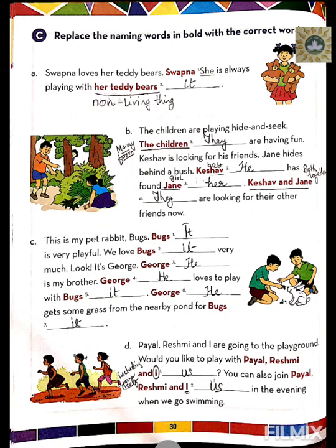Number four: Payal, Rashmi and I are going to the playground. Would you like to play with Payal, Rashmi and I? Since there are three of us including me, we use 'us.' You can also join Payal, Rashmi and I — you can always join us in the evening when we go swimming.